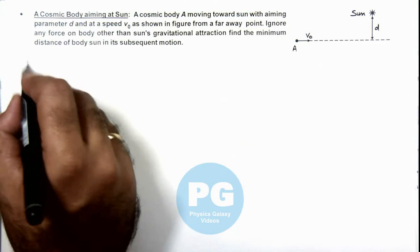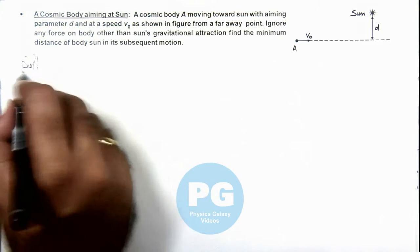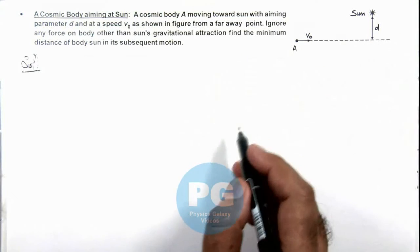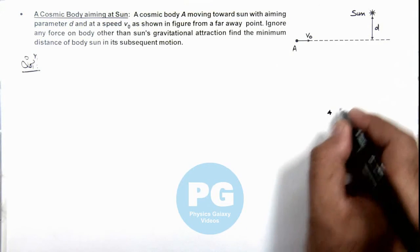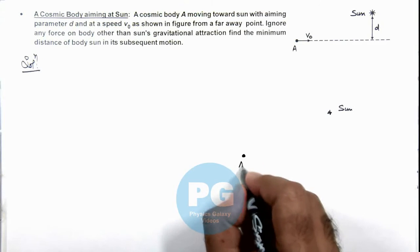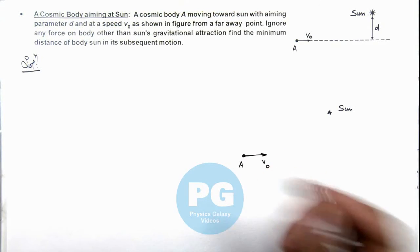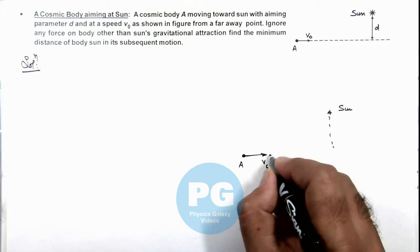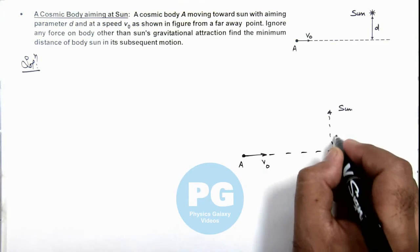Now in this situation, as the body is moving in a straight line from sun, we just redraw the picture for better clarity. This is body A moving at a speed v not, and the aiming parameter to the direction of motion given here is d.